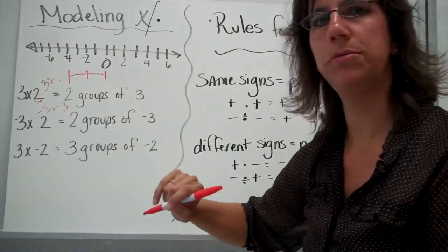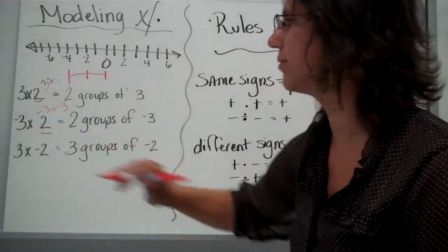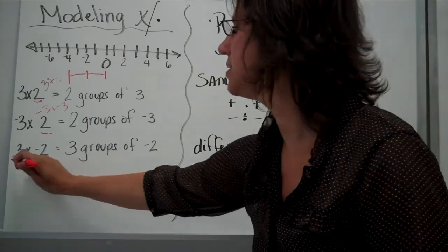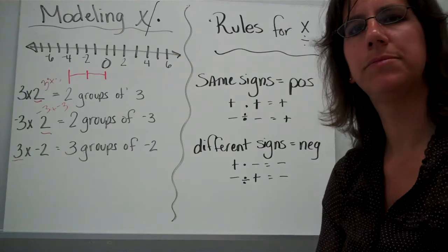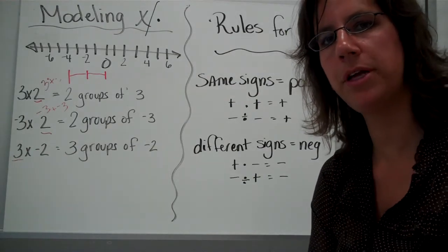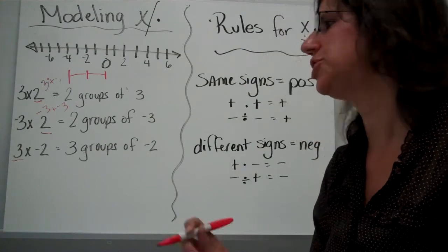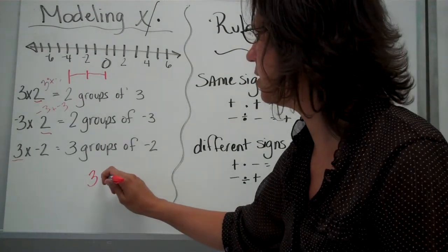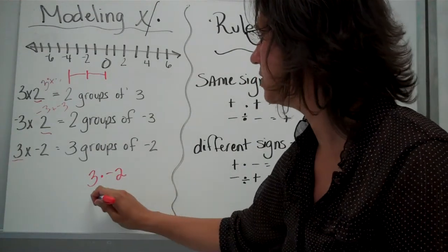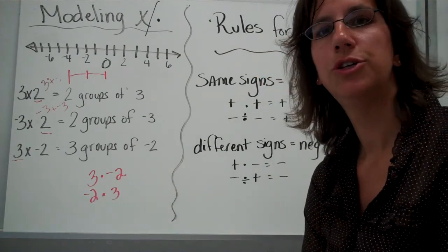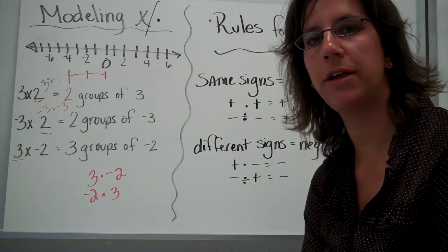Here, this told me the number of groups, this told me the number of groups, and in this one, I switched it, didn't I? Here, I said, this is the number of groups. Do you remember the property? That means we can switch the order in a multiplication problem, and it doesn't change the answer. 3 times negative 2 is the same as negative 2 times 3.